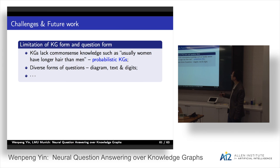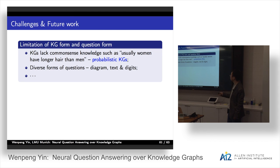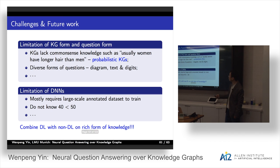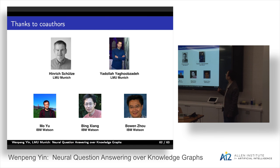Other limitations include knowledge graphs missing common-sense knowledge, and diverse forms of questions like diagrams and digits. Limitations of deep learning: it requires large-scale data to train a good model, and it cannot model numbers well — for example, it doesn't know that 40 is smaller than 50. Our personal opinion is that we should combine deep learning with non-deep learning approaches and richer forms of knowledge. Thanks to my co-authors: my supervisor Henry Schultz, my colleague Yadola, and three IBM researchers Mo, Bin, and Bowen. Thank you all.